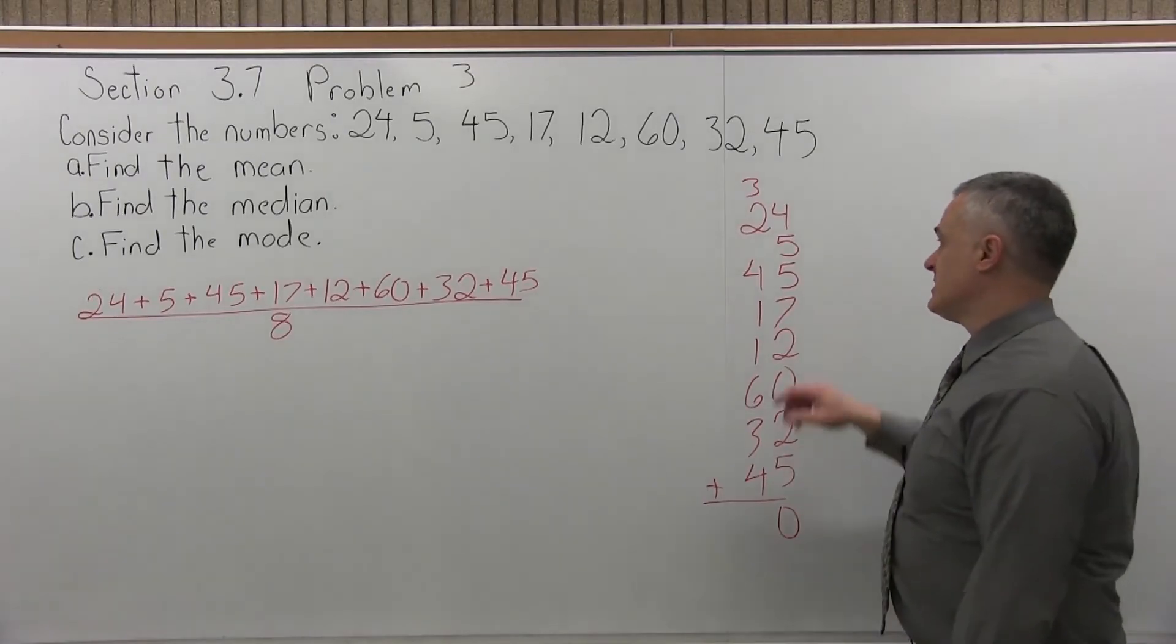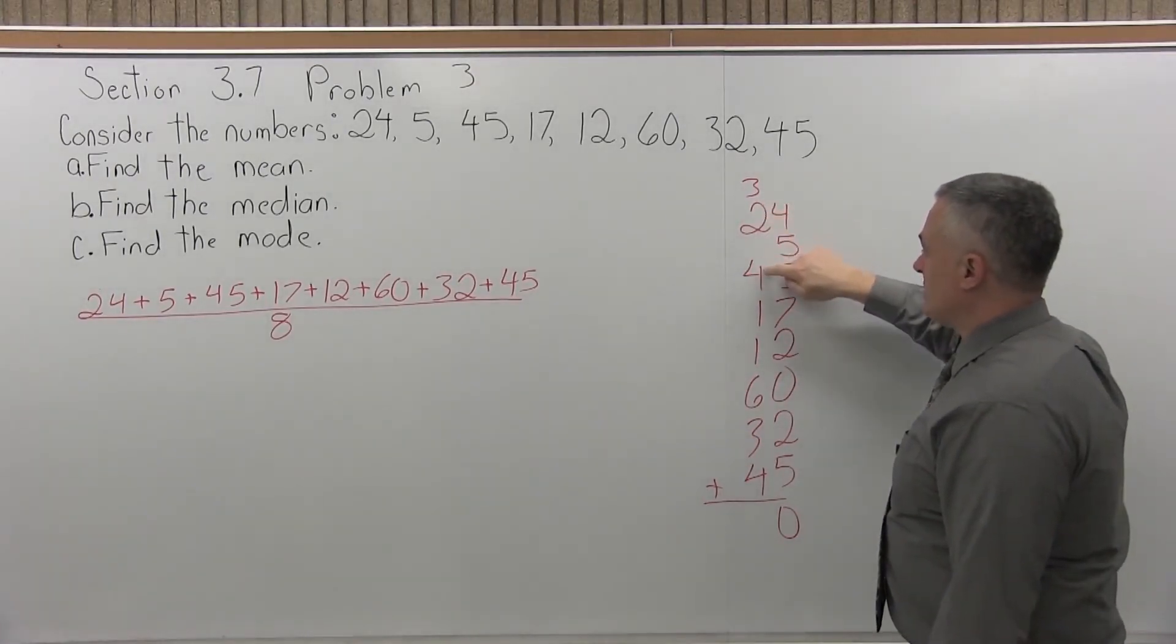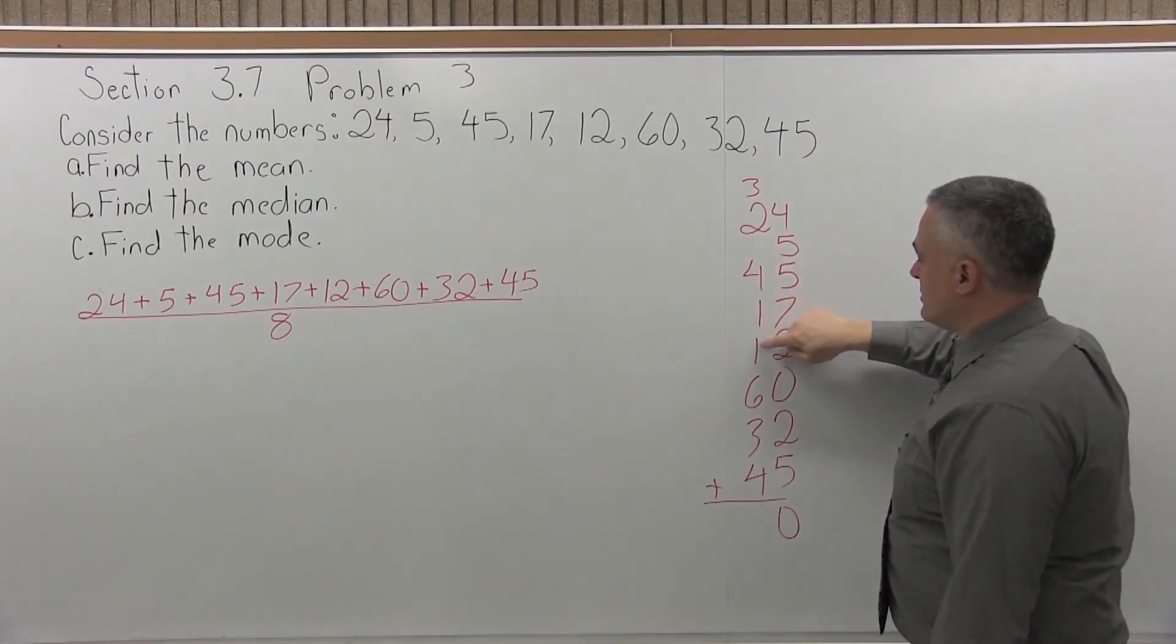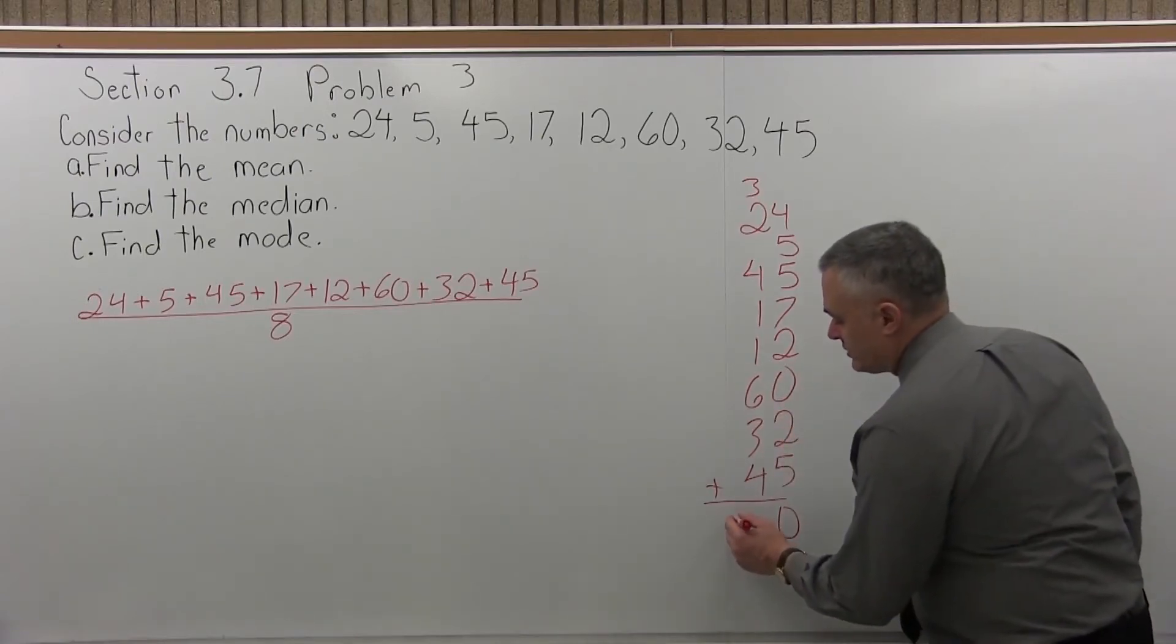Add that column of digits. 3 plus 2 is 5, 5 plus 4 is 9, 9 plus 1 is 10, 10 plus 1 is 11, 11 plus 6 is 17, 17 plus 3 is 20, 20 plus 4 is 24. So the total is 240.